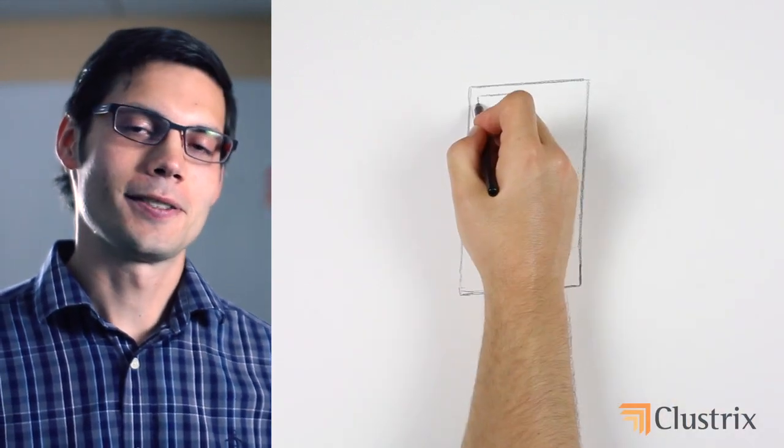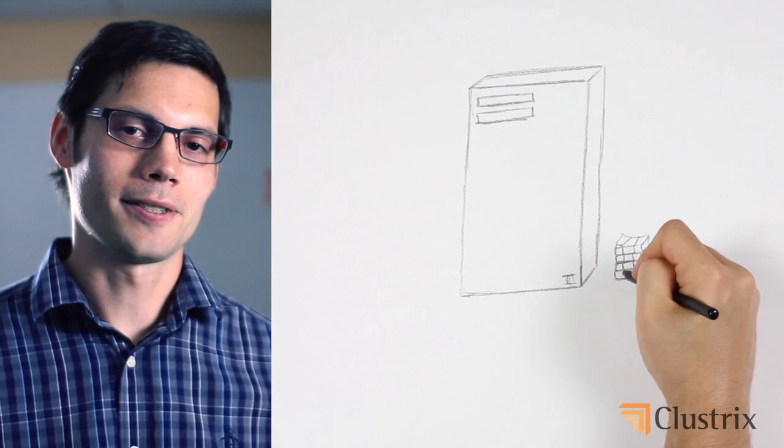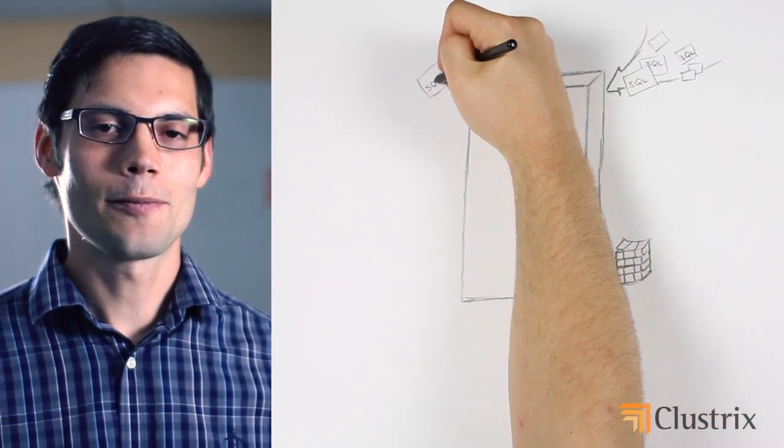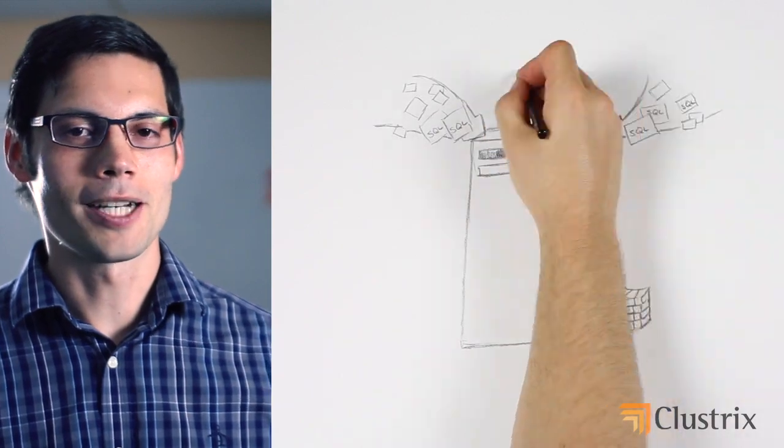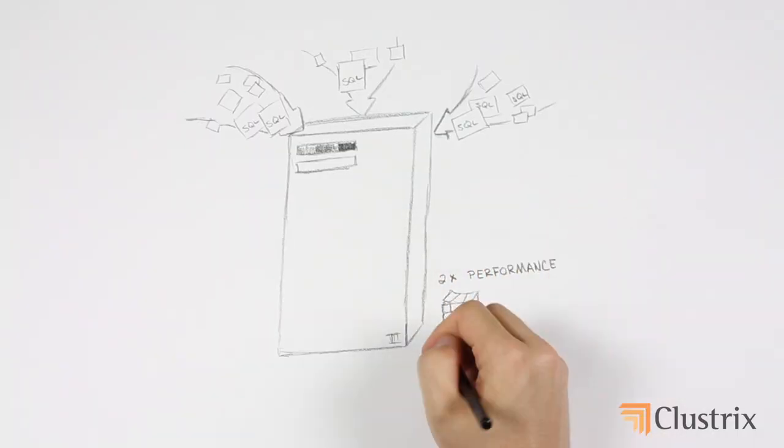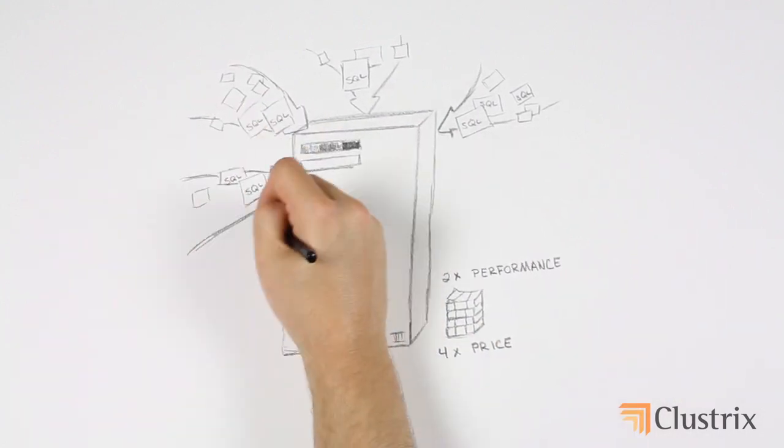Once you start running out of database capacity, one of the first things that people generally do is buy themselves a bigger box. But the problem with the bigger box is that you've paid maybe four or five times the price of your previous solution, but you didn't see four or five times increase in performance. You probably saw maybe a 2x performance increase from that kind of solution.